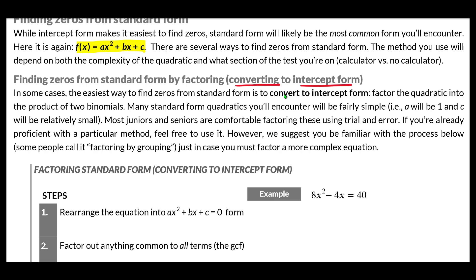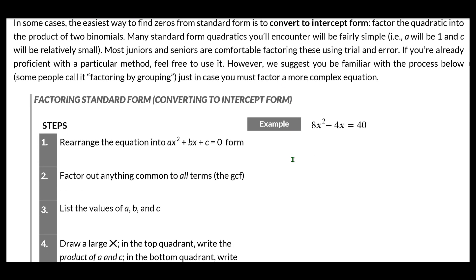Many juniors, many seniors, even most sophomores have methods for converting standard form to intercept or factored form. If you have a method that works for you, no matter how complicated the quadratic gets, just go ahead and use that method. I would recommend watching the factoring by grouping method we go through here. This method tends to be reasonably straightforward and efficient. The vast majority of quadratics you might have to factor on this test are going to be fairly simple.